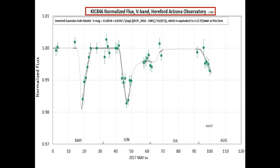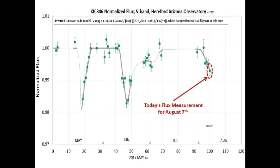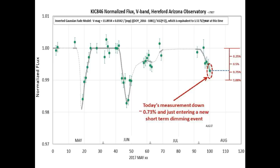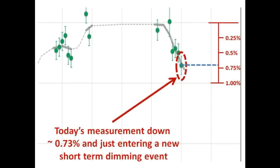This is the flux graph of Tabby's Star taken today August 7th in the V-band. The normalized flux line is the long-term accelerating dimming curve — if you don't calculate the normalized flux level this way, the dips will look deeper than they really are. Today's flux measurement puts us approximately 0.73% below the nominal flux level. The subjective tipping point for declaring a short-term dimming event is approximately 0.7% below nominal flux levels, so this channel is declaring the beginning of a short-term dimming event.